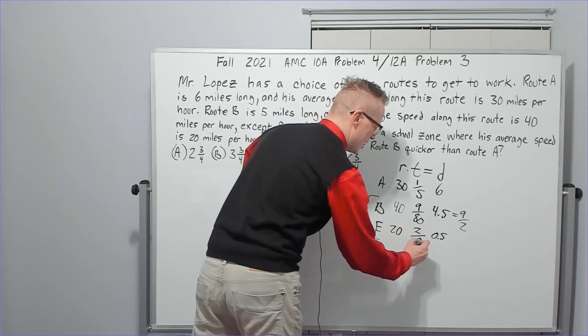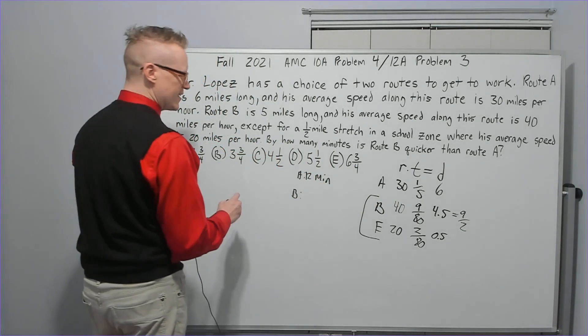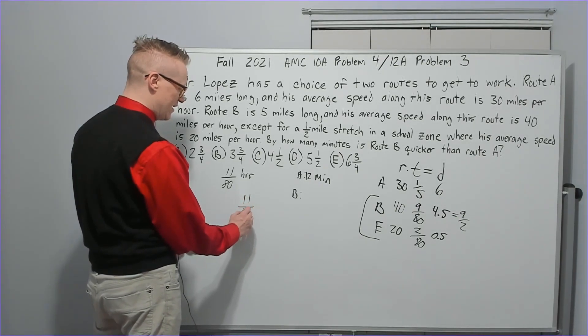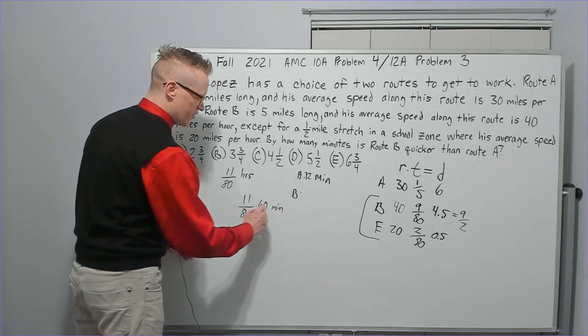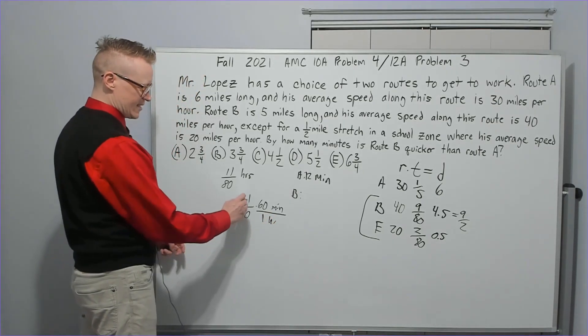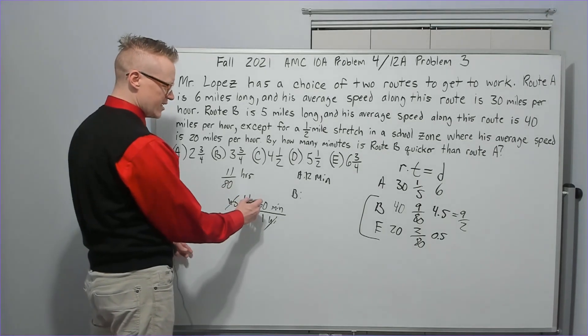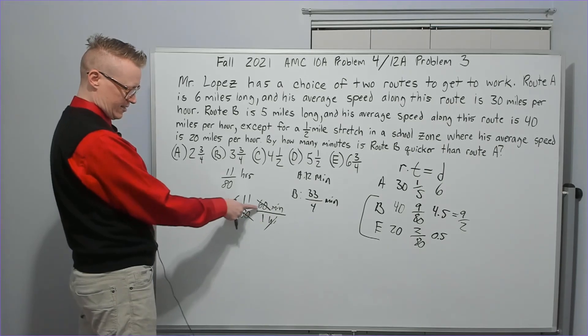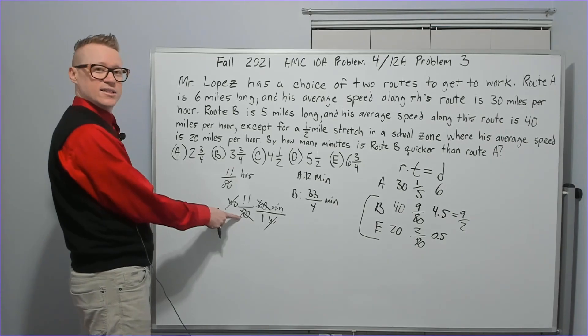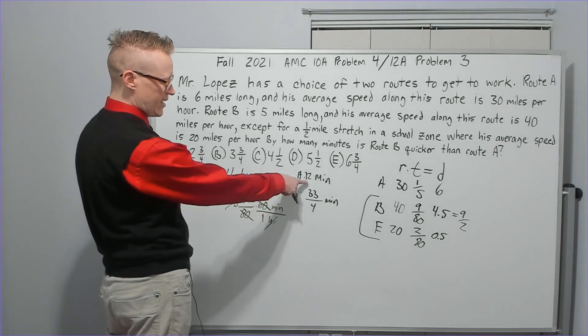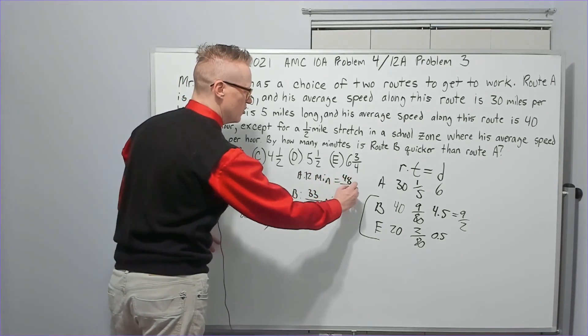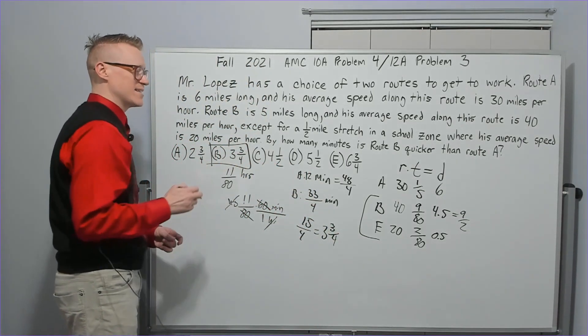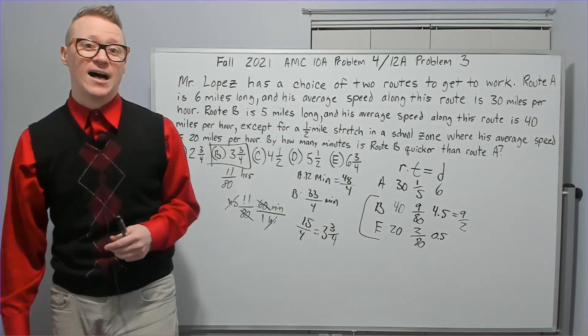We're going to add those together. It's going to take 11 over 80 hours. We're going to multiply that by 60 because there's 60 minutes in an hour. So 60 over 80 is three fourths. That's 33 over four minutes. B is faster. We just need to take this, convert it into something over four. That's going to be 48 over four subtract 33 over four equals 15 over four, three and three fourths minutes faster on route B than route A.